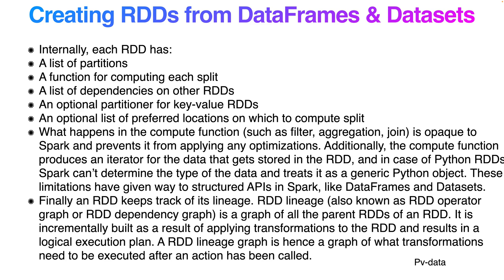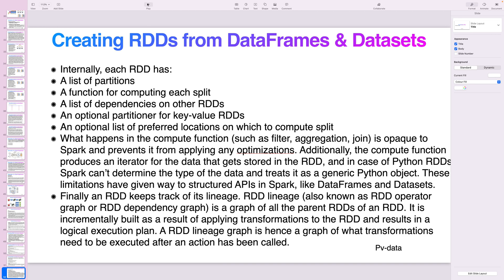Internally, each RDD has a list of partitions, a function for computing each split, a list of dependencies on other RDDs — called the DAG — and optionally a partitioner for key-value RDDs and a list of preferred locations for compute splits. Operations such as filter, aggregation, and join are passed to Spark. In the case of Python RDDs, Spark cannot determine the type of data and treats it as a generic Python object. This limitation gave rise to the structured API. RDDs also keep track of their lineage, also known as the RDD operator graph or Directed Acyclic Graph (DAG).